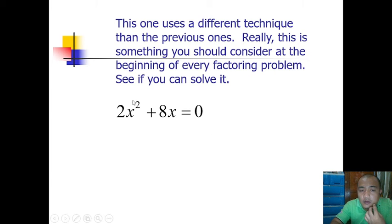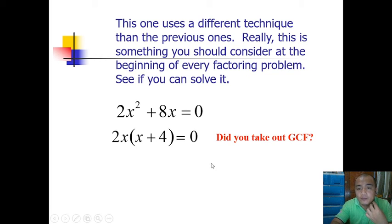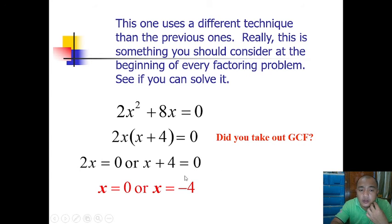Since there is a common factor between 2x² and 8x, which is 2x, that's what you're going to factor out. 2x² divided by 2x is x; 8x divided by 2x is 4. So 2x(x+4)=0. Then apply the zero product property: 2x=0 or x+4=0. So x=0 or x=-4. Why zero? Because zero divided by 2 is still zero. Zero and negative 4 are the solutions.